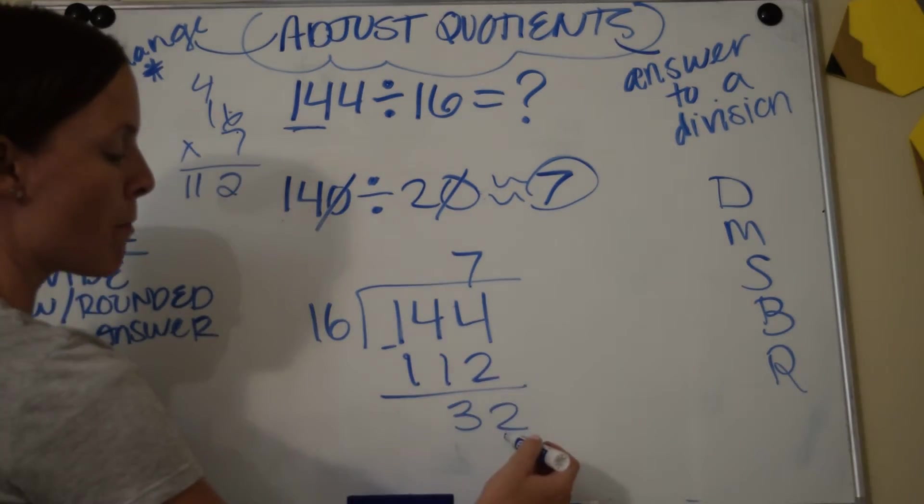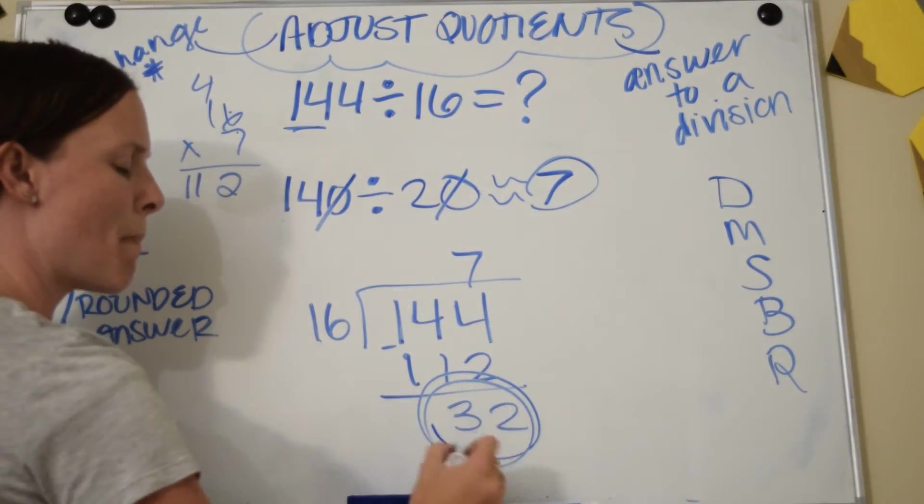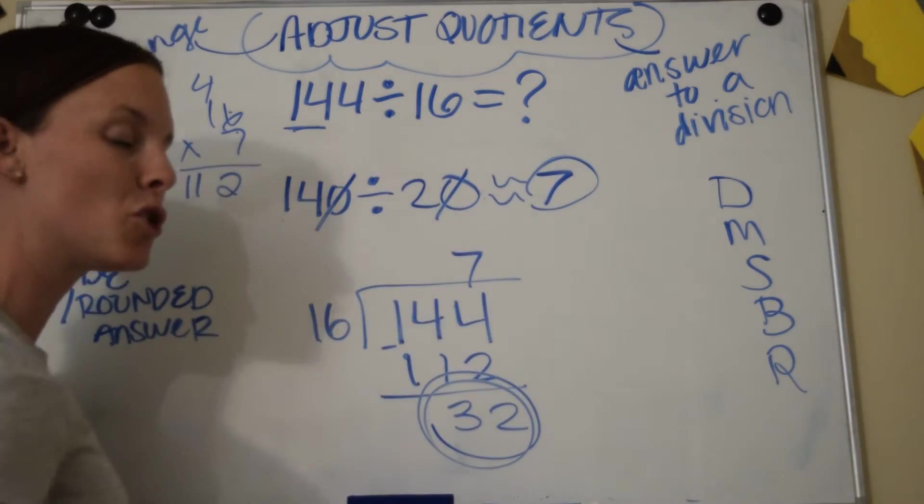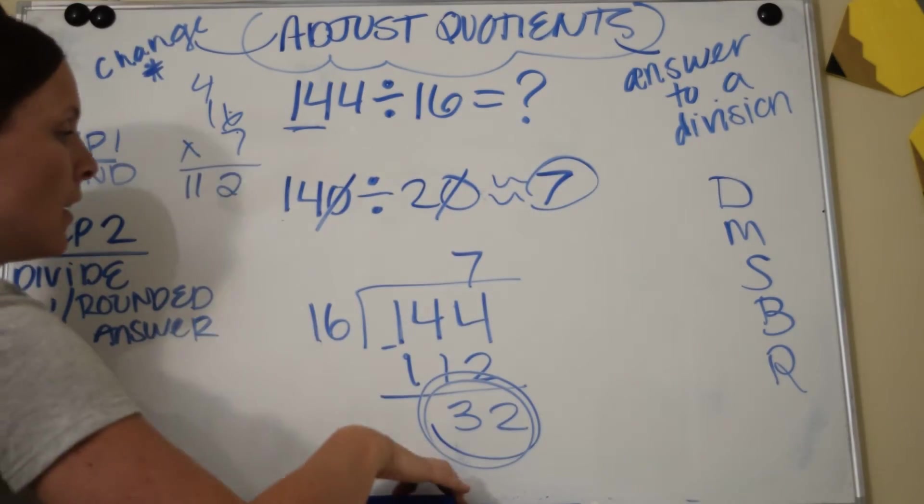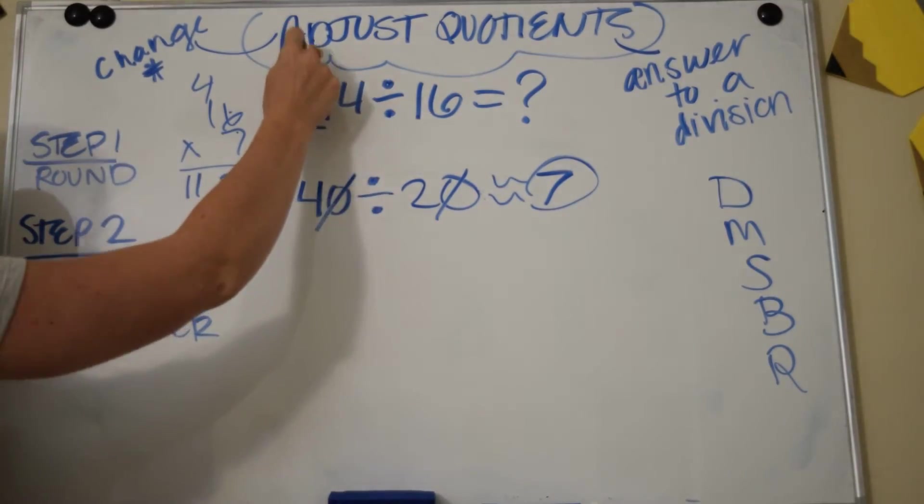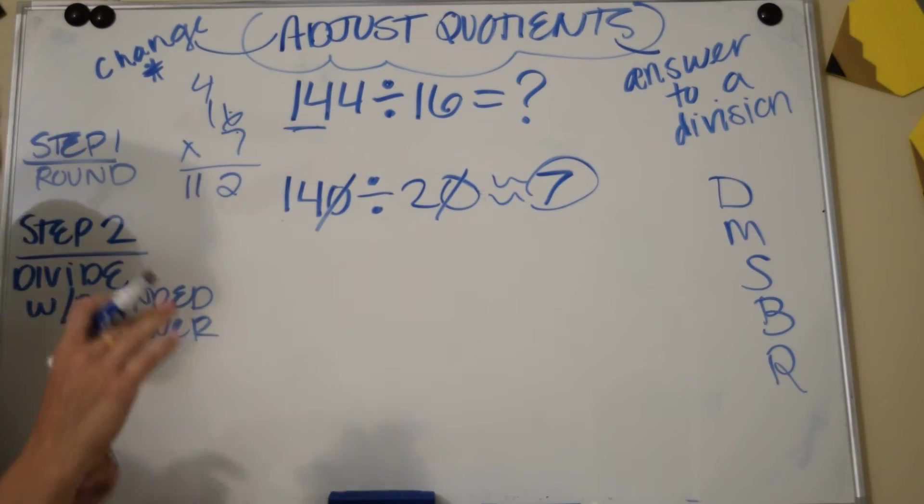Because right now my answer is 7 remainder 32, and that's not what I rounded. And because I have this huge amount left over, that tells me I need to change my 7 into an 8 and round up. So now what I'm going to do is I'm going to round up, and that's what I'm doing. I'm adjusting it. So I'm going to say, you know what, 7 I had a huge remainder, I'm going to get rid of a big remainder.